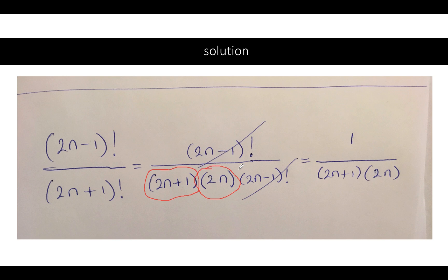Remember you always decrease by 1. You start with 2n plus 1, 2n, and then you go down by 1 to 2n minus 1 factorial. Why did I stop at 2n minus 1 factorial? Because I already have a 2n minus 1 factorial in the top numerator, so all I can do is cross them out. I'm left with 1 over 2n plus 1 times 2n.